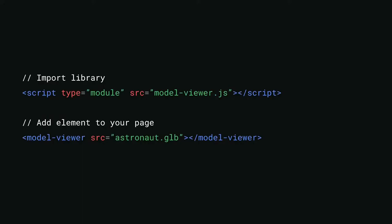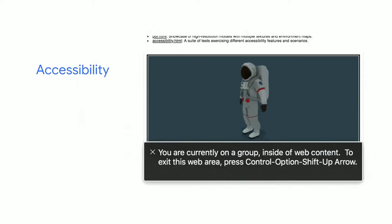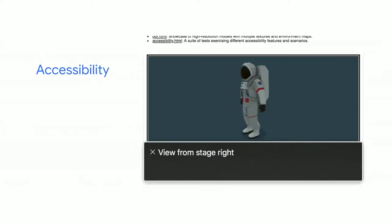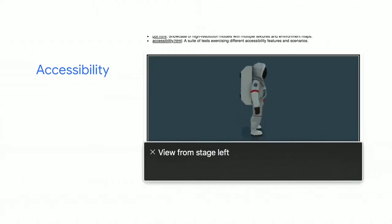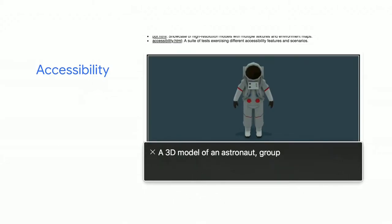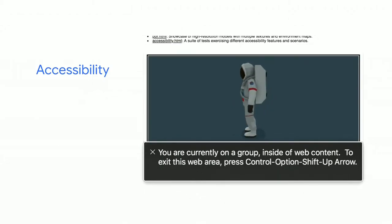An important feature of HTML tags is accessibility. For low vision and blind users, we're trying to inform them about what the 3D model is and also the orientation of the model. The view angle is communicated verbally to the user so they can be oriented with what's going on, and it prompts them on how to control the model with the keyboard and provides an easy exit back to the rest of the page.